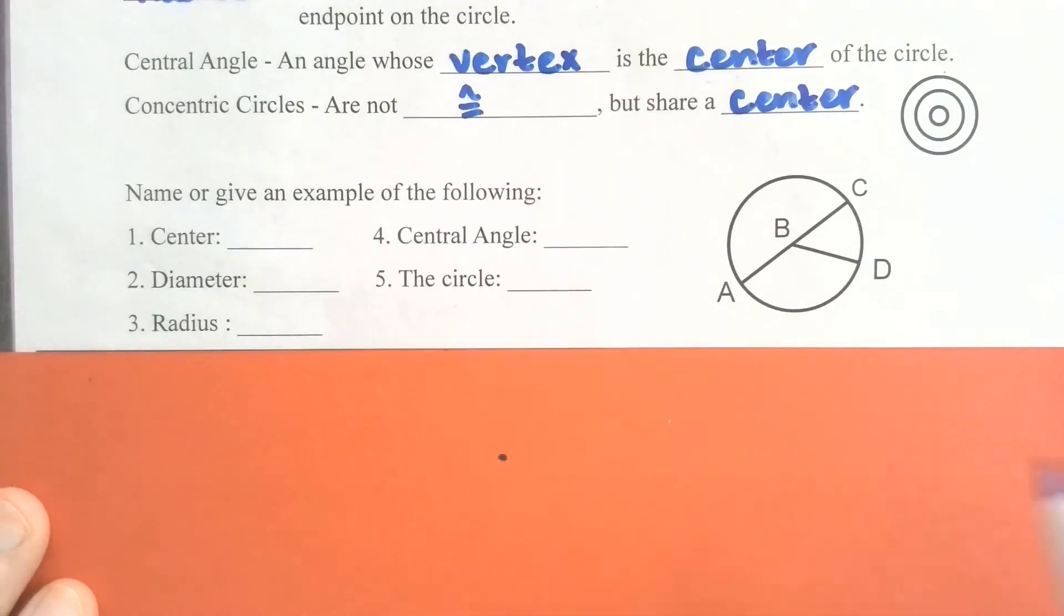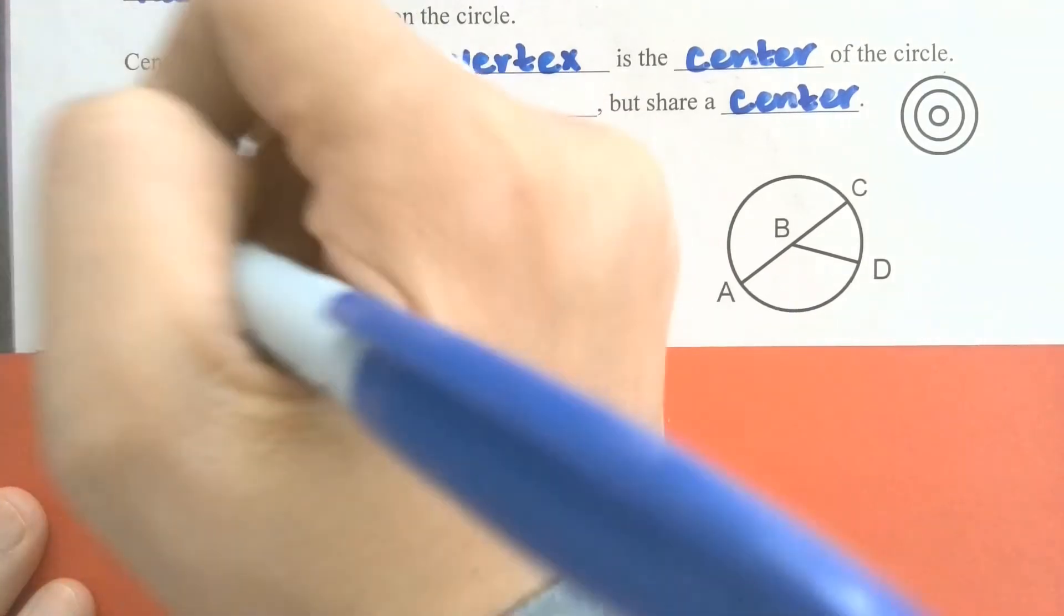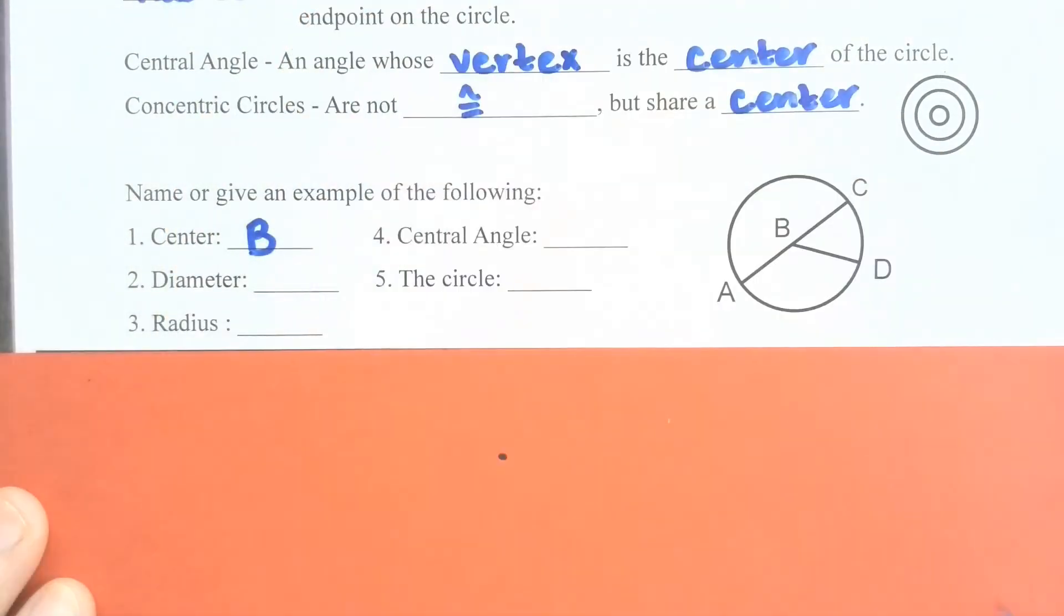To give an example of each of those, looking at our diagram over here, the center of this circle is point B. A diameter that we've been given, the only one that's drawn in here, is segment AC.